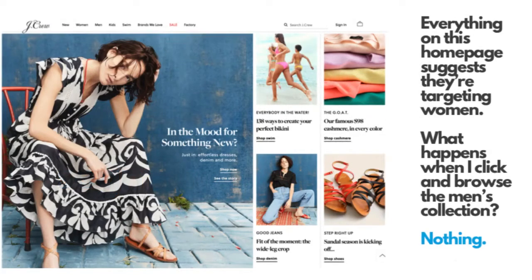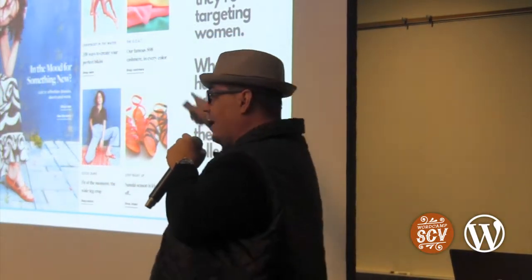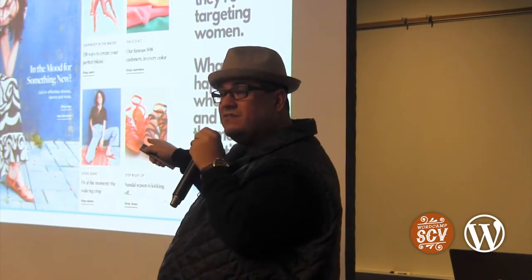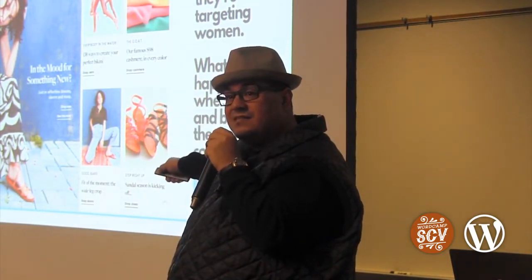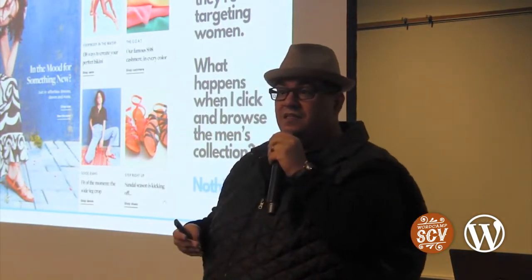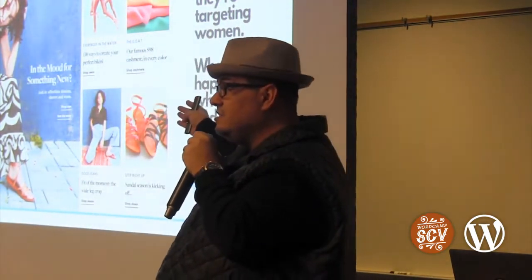This is J.Crew. I come to the site and there's a 'men' label up top, so I click on it. I look at t-shirts, shoes, all sorts of stuff. But when I come back to the homepage, it still looks exactly the same — even though my behavior suggested I'm someone who'd like to look at male clothing. Their homepage didn't change.